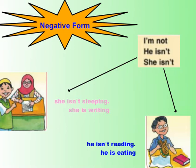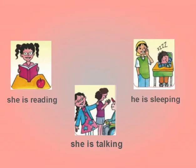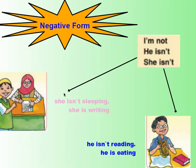Summary: in affirmative form — I am, he is, she is plus verb plus ing; for example, he is reading the book now. In negative form — I am not, he isn't, she isn't plus verb plus ing; for example, he isn't reading — he is eating.